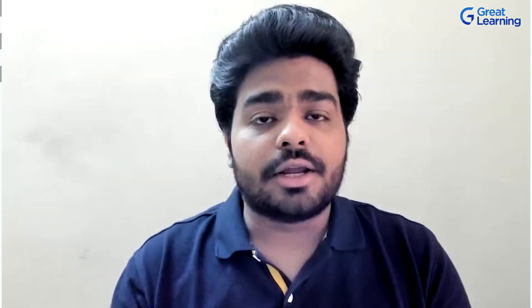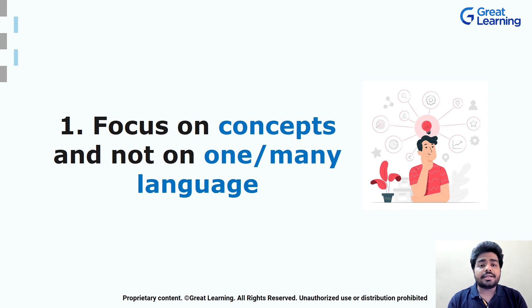So let's get started and understand the 10 to 11 pointers you should avoid if you want to become a software developer. The very first point is to focus on concepts and not on one or many languages. Many beginners actually focus on several languages rather than on concepts. You should choose only one language, let it be Python, read it deeply, understand its concepts, and start working in that language. The other languages you can learn automatically — don't worry about that.